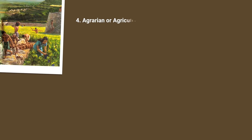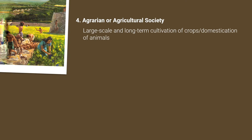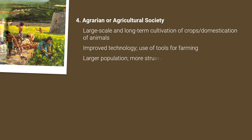The Agrarian or Agricultural Society was an evolution of both pastoral and horticultural societies. It involved the large-scale and long-term cultivation of crops and the domestication of animals. It was characterized by improved technology and the use of tools for farming, a larger population, and a more structured social system. Because of this, it also had conflicts with neighboring societies over land and resources.